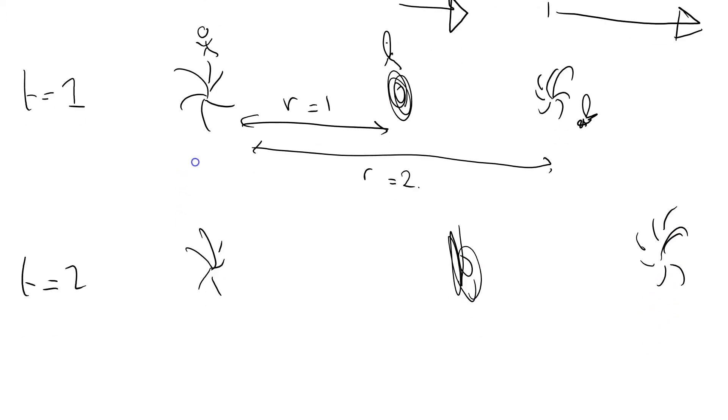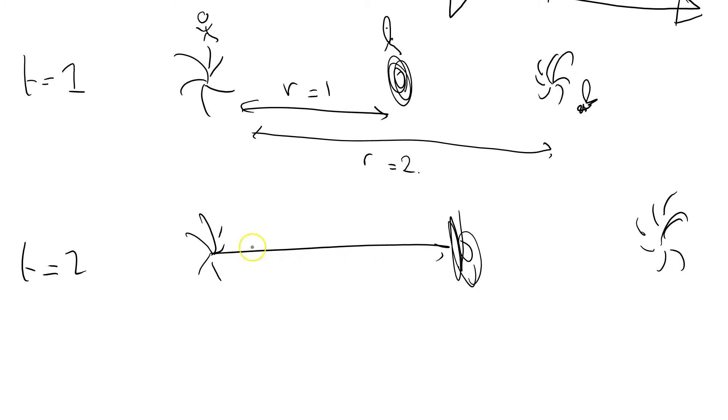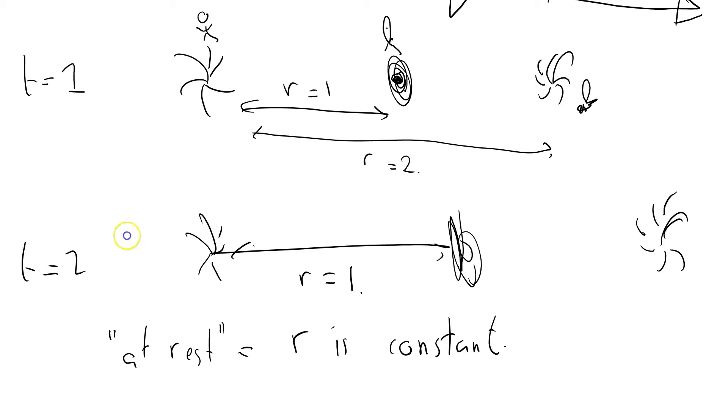This one's moved away as well, but he's still at r equals 1. So the fact that this galaxy is at rest is explained or quantified by the statement: at rest equals r is constant. That's a nice feature we want our coordinate system to have - things at rest have constant r. Of course, r_N is increasing.